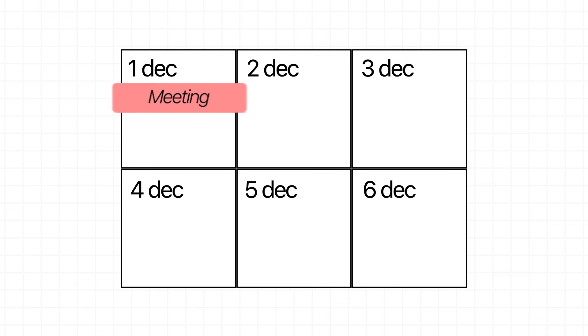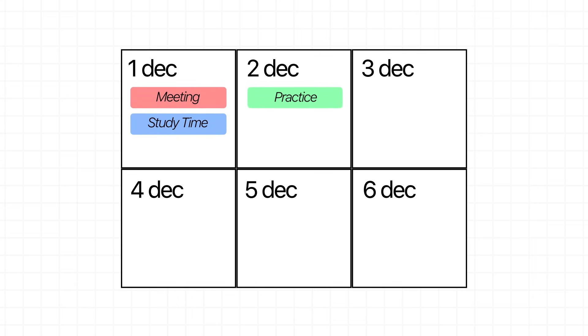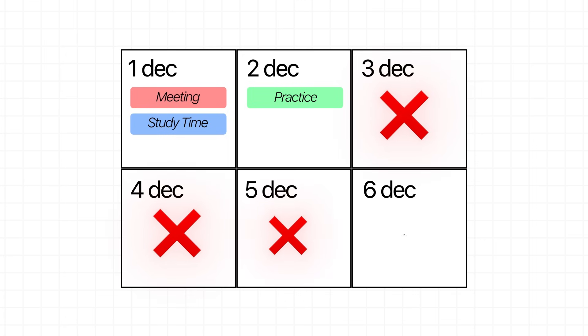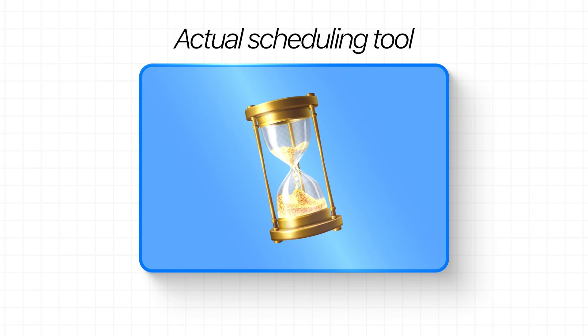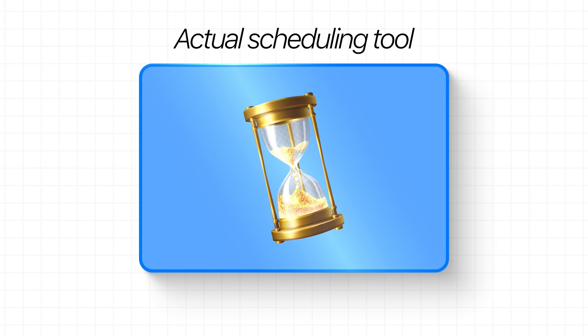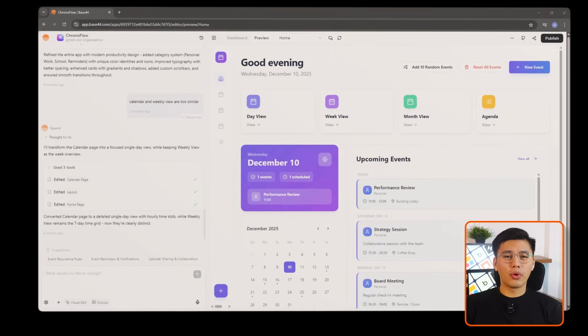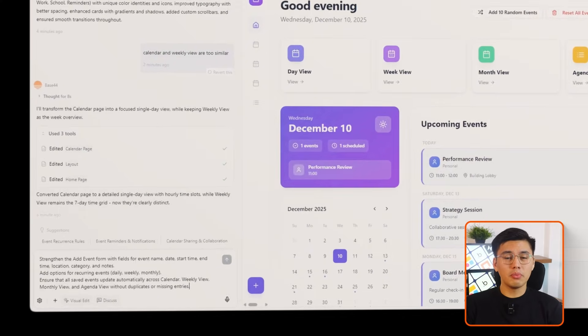Anyone who's ever relied on a calendar app knows the real power isn't in the calendar view — it's in how fast and effortlessly you can add events. If adding something takes more than a few taps, people stop using the app altogether. So here I want to turn our simple layout into an actual scheduling tool that people would use every single day. Let's prompt Base44 to build it out.